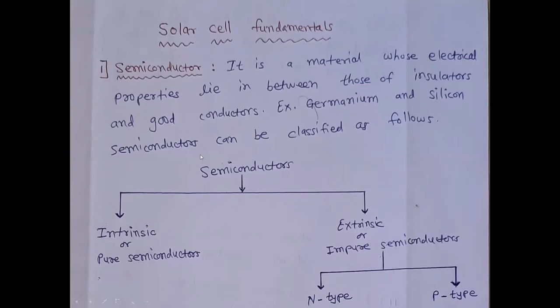So this semiconductor can be classified into two categories. See here, semiconductor. First category is intrinsic or pure semiconductor. Second is extrinsic or impure semiconductor. Again, this extrinsic semiconductor can be divided into two types, n-type and p-type.